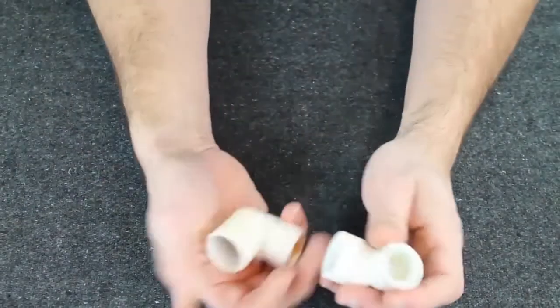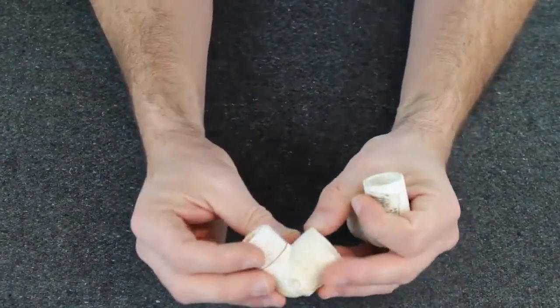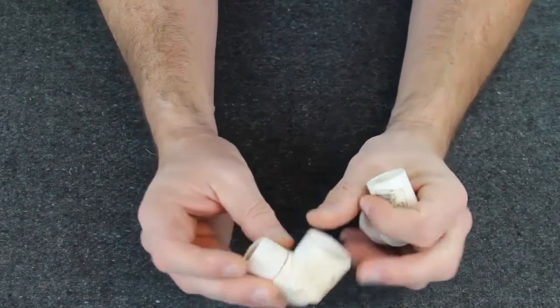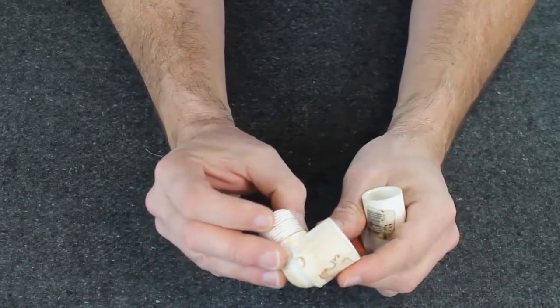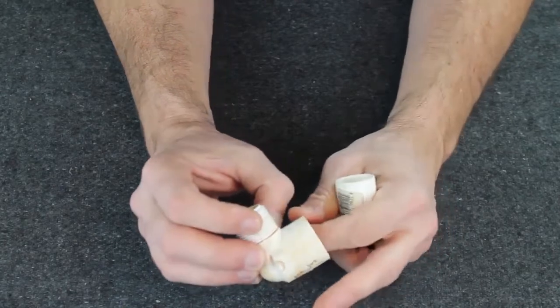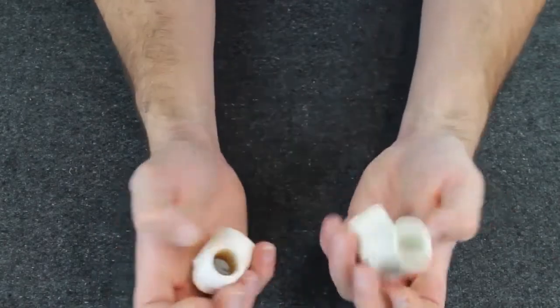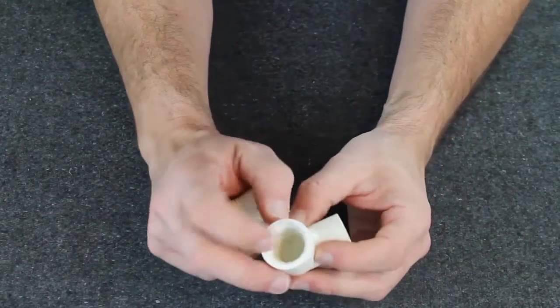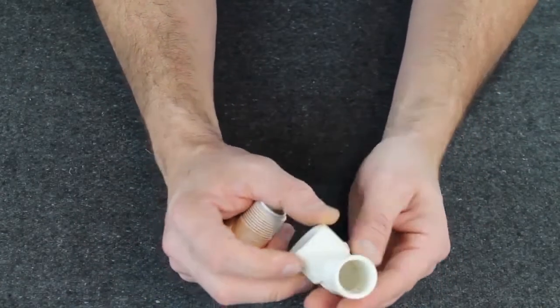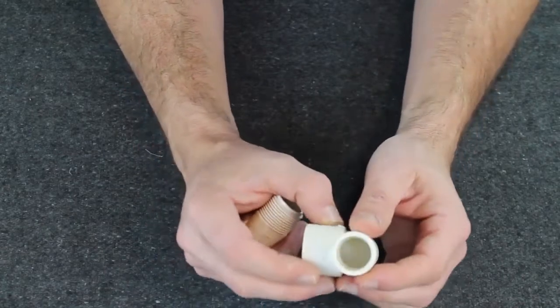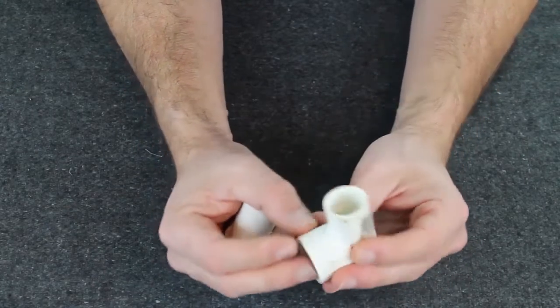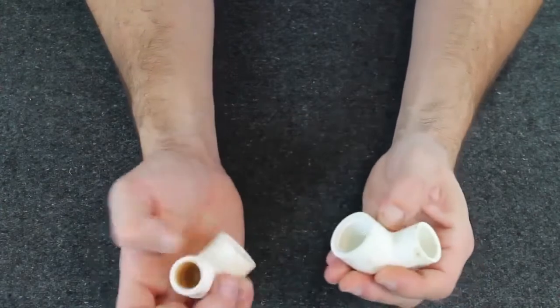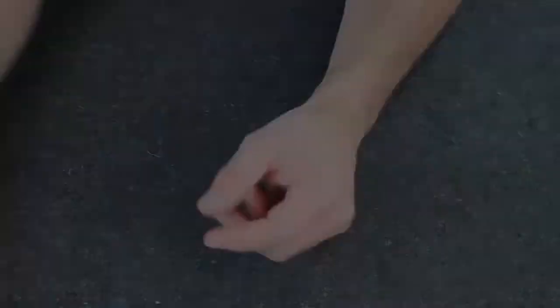You have a couple of other elbows here, and these are called street elbows, and it's possible to get these in different configurations. This one is a slip by male adapter, and you also have the inverse of that, which is the female adapter on one side, and then it goes down to a half inch fitting on the other side. So you have all different types of fittings here that can switch back and forth.